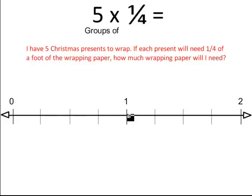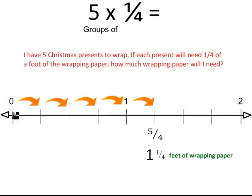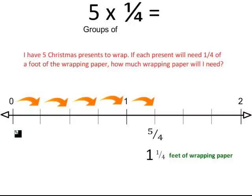The distance from 0 to the first line is 1 fourth because there are 4 equal pieces before 1 whole. I have 5 groups of 1 fourth, so using the number line I jump: 1 fourth, 2 fourths, 3 fourths, 4 fourths, and 5 fourths. That gives us 5 fourths as an improper fraction. On the number line it's easy to see 1 whole and 1 fourth — altogether, 1 and 1 fourth feet of wrapping paper.